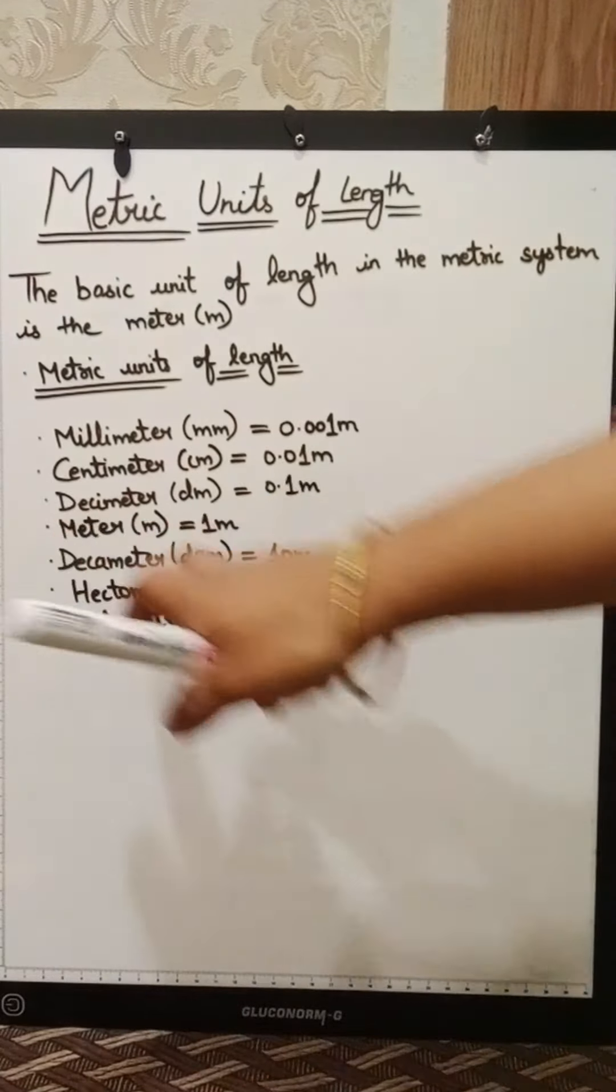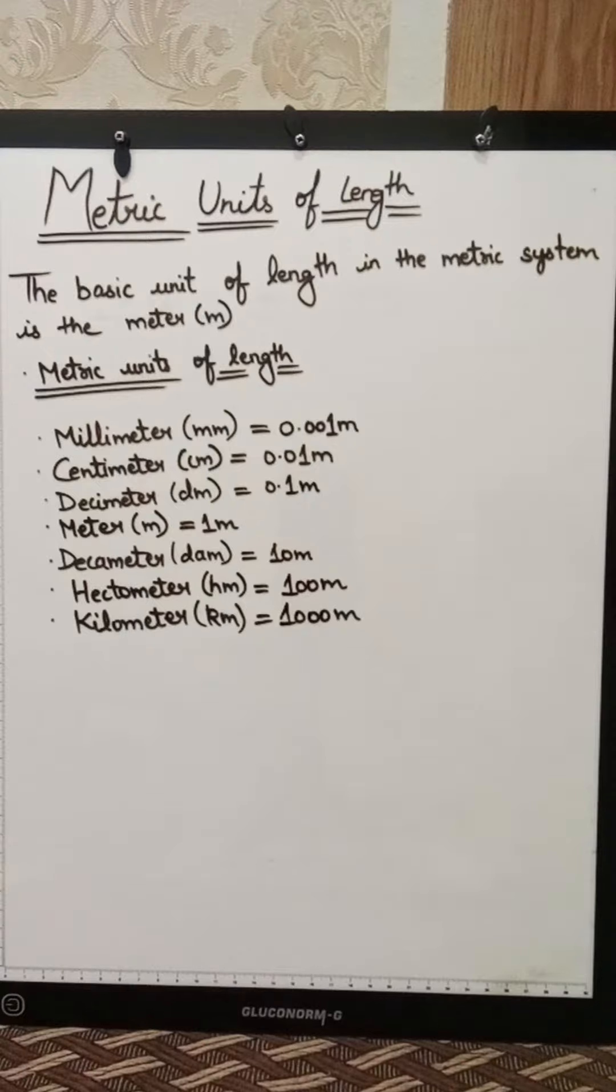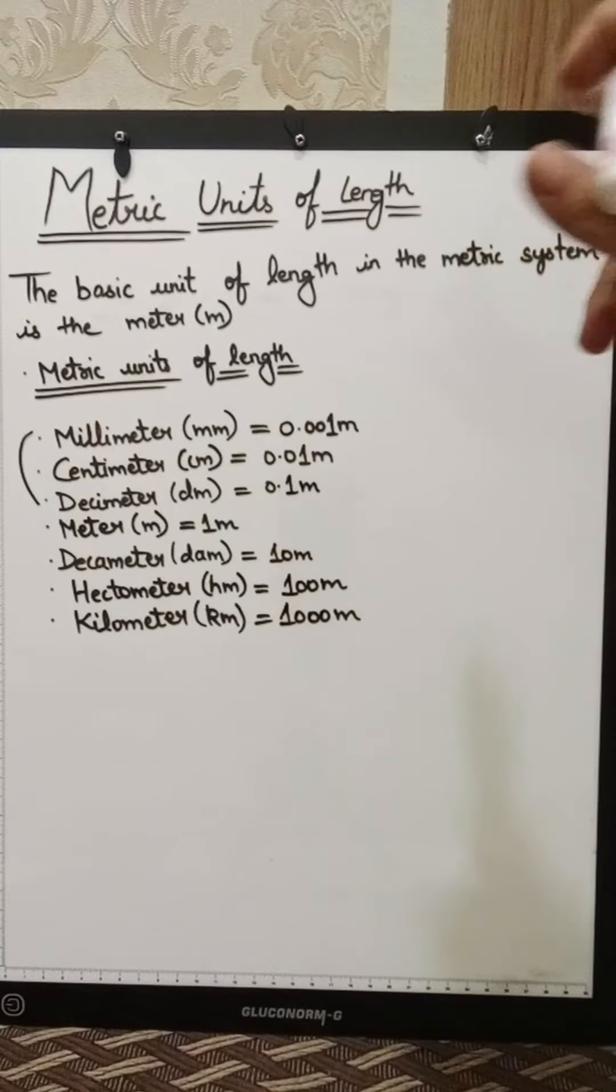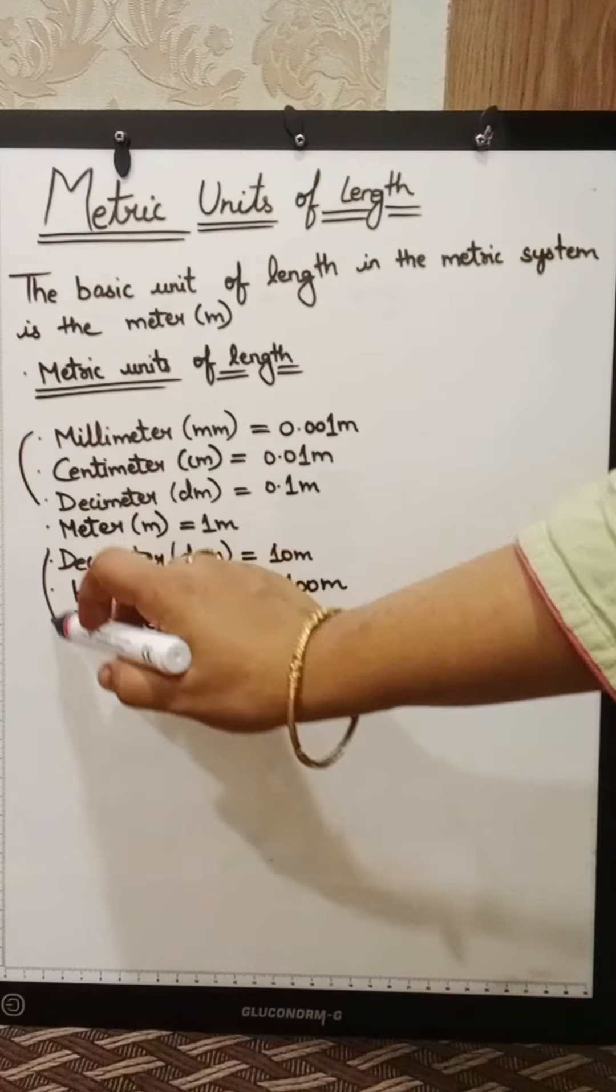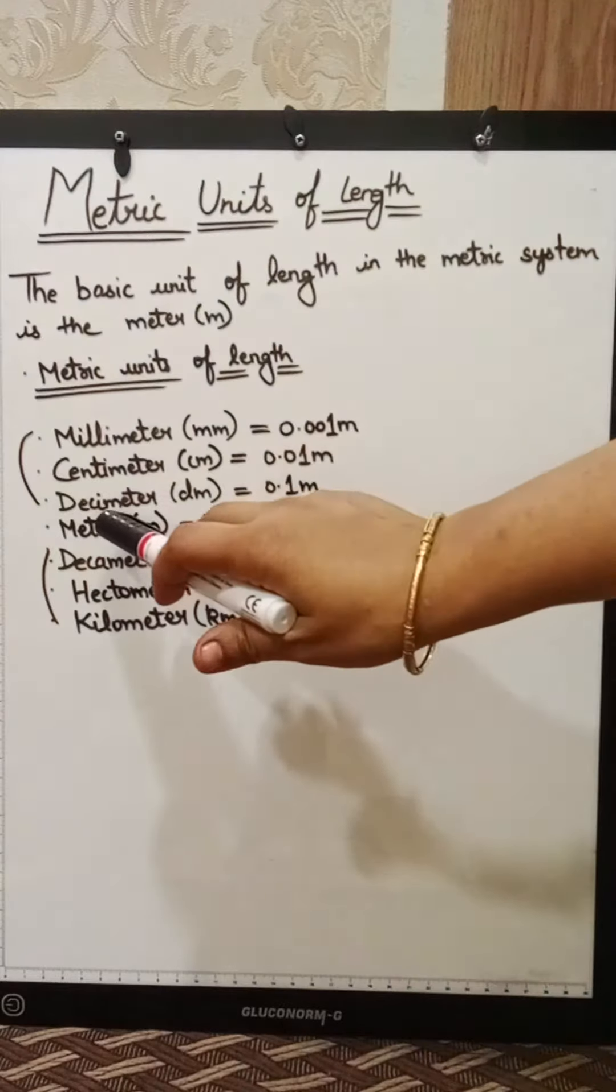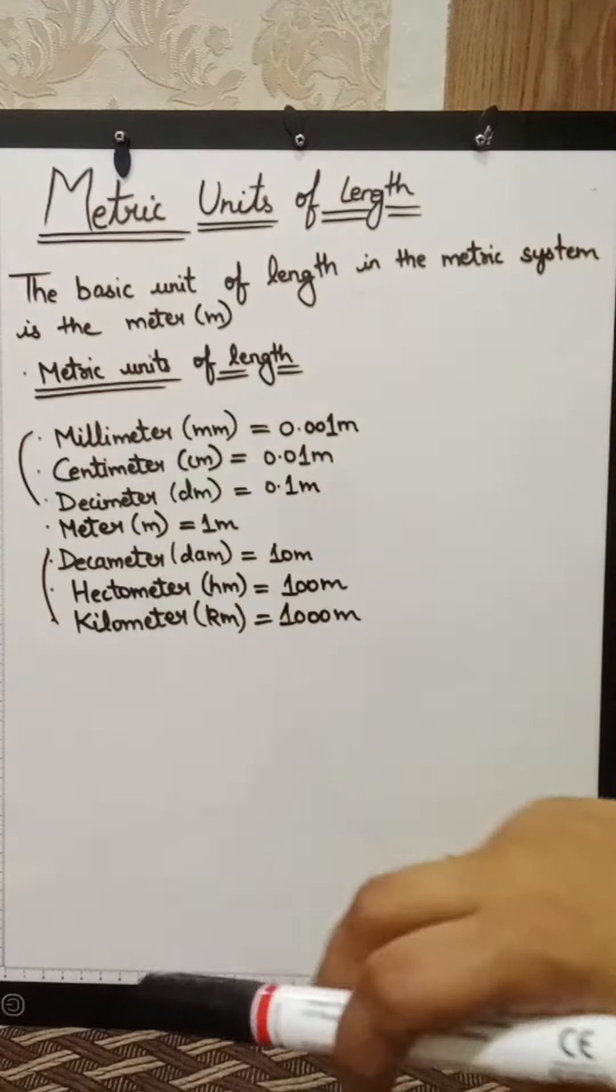The meter is coming here. What does it mean? These three are smaller than meter, and these three are bigger than meter. So what happens? The units smaller than meter will be divided.